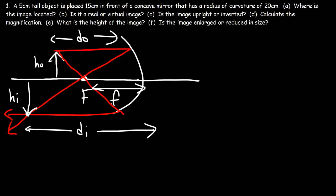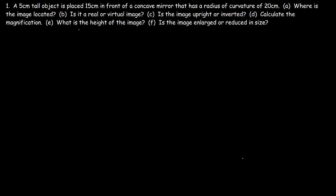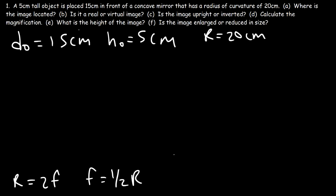Let's go ahead and calculate these things using an equation. dO in this example is 15 centimeters, the height of the object is 5 centimeters, and the radius of curvature is 20 centimeters. The radius of curvature is twice the focal length, so the focal length is half of 20, which is 10 centimeters.